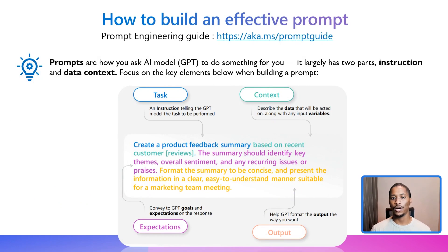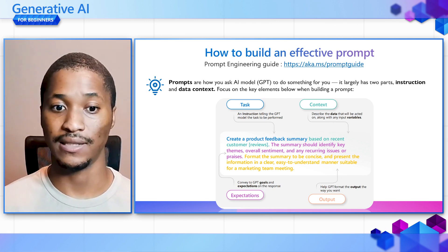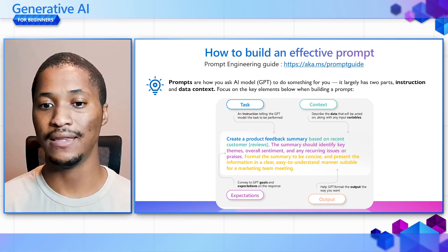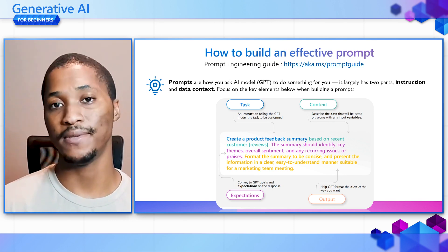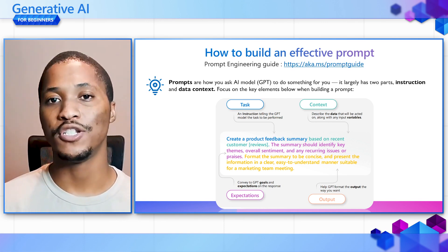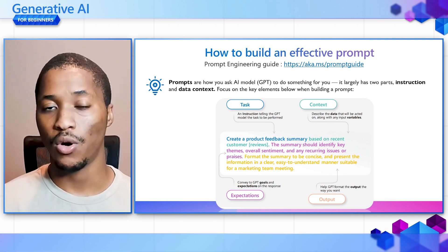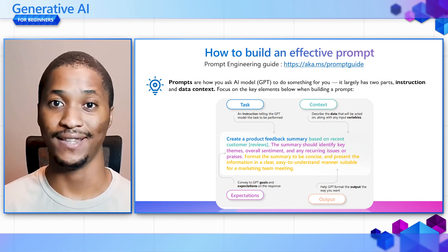With all this prompt discussion, we need to think about how to build an effective prompt, because when using Generative AI we want the best response from the model. This is where prompt engineering comes in. When building an effective prompt, consider: the task — an instruction telling the GPT model what to do; the context — describing the data to be acted on along with any input variables; the expectation — conveying the goals and expected response to GPT; and the output — helping GPT format the response the way you want it.